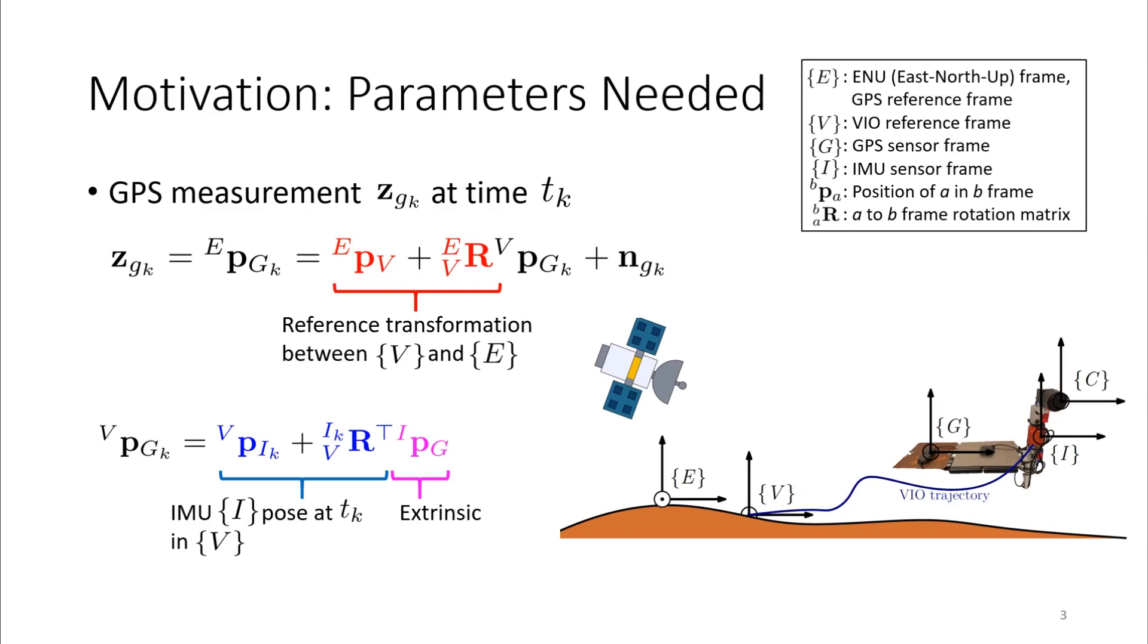The function contains three different types of parameters: the reference frame transformation between the VIO frame and the ENU frame, which is the reference frame of the GPS measurement, the pose of the IMU in VIO frame, and the sensor extrinsic.